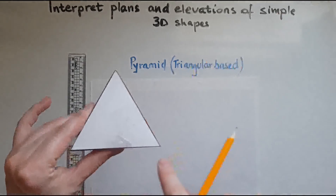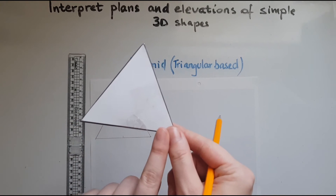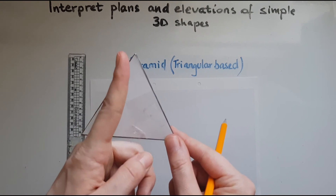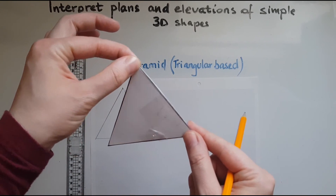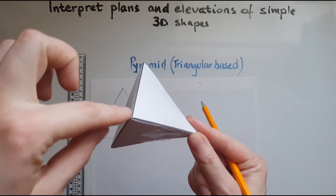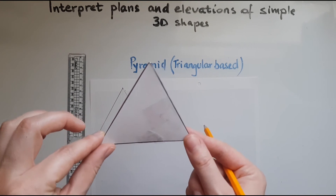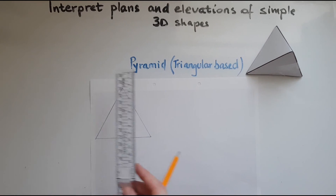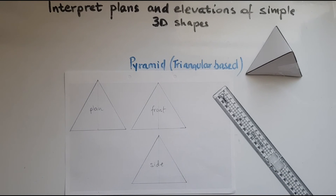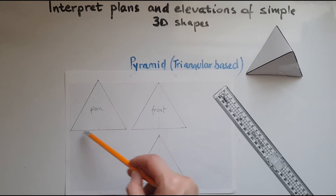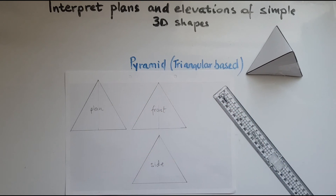Now we'll look at the front elevation and the side elevation, which will be identical. For the front elevation, we've got the base length and we put the height. The height of the pyramid cannot be measured on the outside — it's got to be inside — so you wouldn't be able to do this at this level; I'll give it to you: it's about 8 centimetres high. The front and the side ones look identical because the height is the same. The triangle for the plan is not of the same height, and that is perfectly fine.